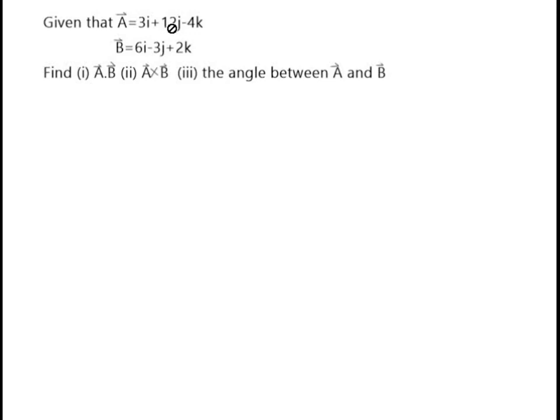You also multiply the coefficient of j, which is 12, with the coefficient of j in vector B, which is minus 3. You do likewise to the coefficients of k, that is minus 4 multiplied by 2. Now you know, 3 multiplied by 6 is 18, minus 3 multiplied by 12 is minus 36, minus 4 multiplied by 2 is minus 8.